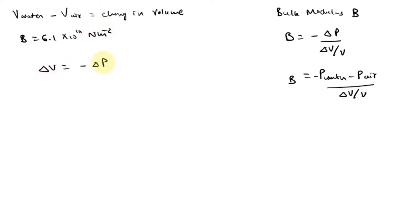V will be minus delta P divide by B by V. So this will be 1.99 into 10 raise to 5 into 0.5, divided by 6.1 into 10 raise to 10. That will be minus 1.63 into 10 raise to minus 4.